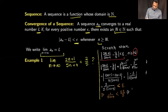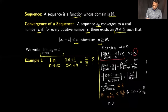Taking the reciprocal flips the inequality: 5n+4 > 3/(5ε). Subtracting 4 and dividing by 5 gives n > (3/(5ε) − 4) / 5. This real number is our person of interest for choosing capital N.